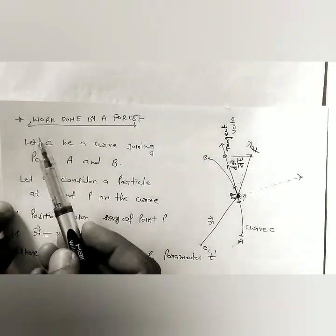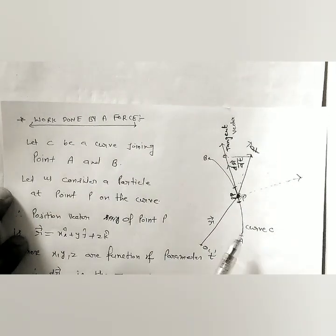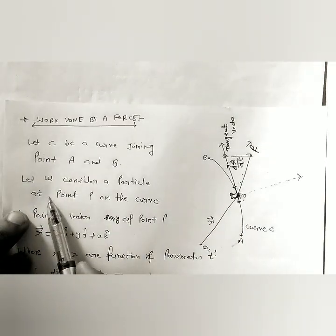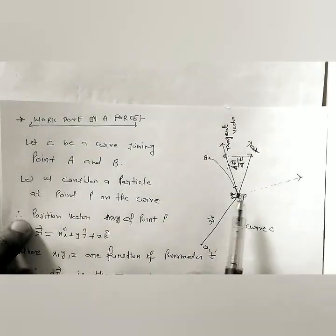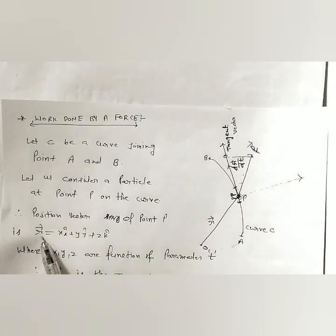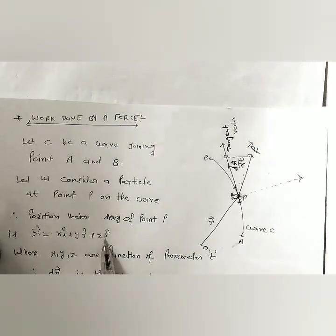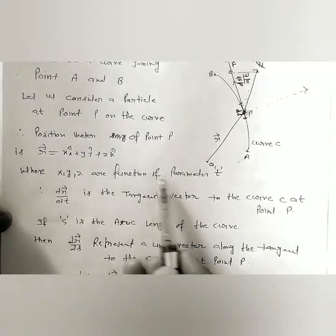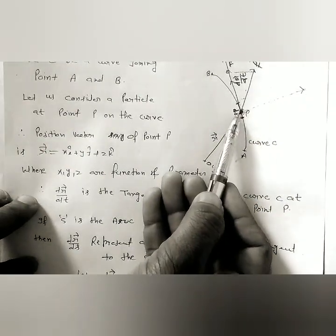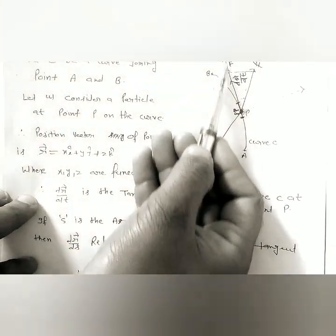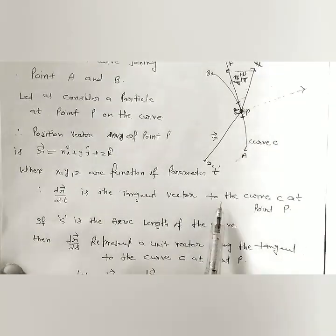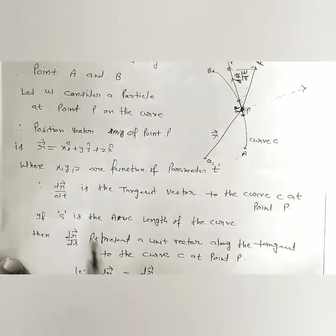Let c be any curve joining point a to b. Consider a particle at point p on the curve. The position vector of point p is r vector equal to xi plus yj plus zk, where x, y, z are functions of parameter t. Therefore dr/dt is the tangent vector to curve c at point p. If s is the arc length of the curve, then dr/ds represents a unit vector along the tangent to the curve c at point p.